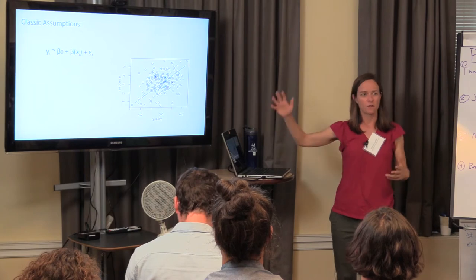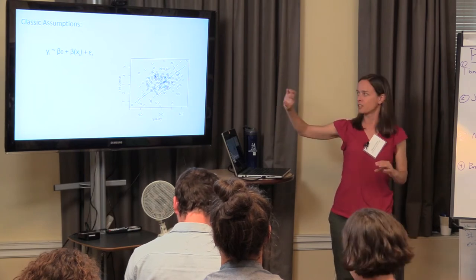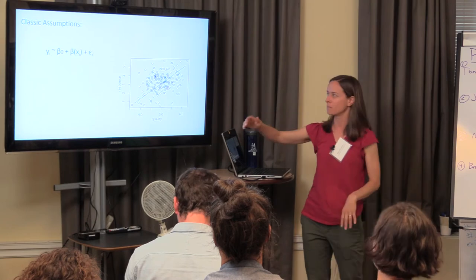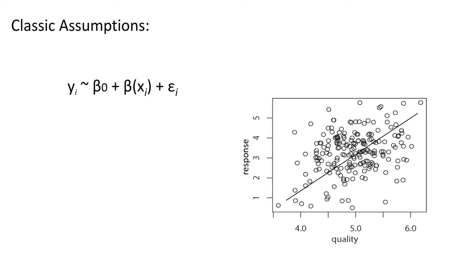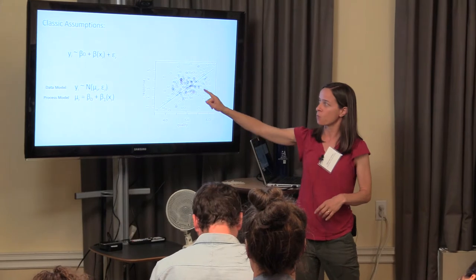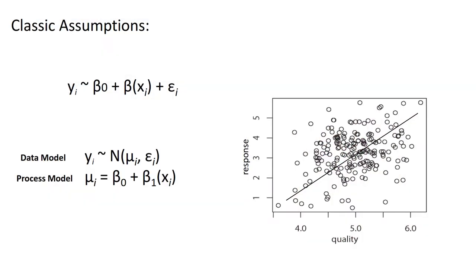I'm going to go over some terminology and formatting to make sure we're all on the same page. This line is a model — a linear model — and in this case it has an intercept and a slope. Those are our beta terms and some error. We can think about this as a data model where y, our observations, are normally distributed with some mean mu and an error term. That's our observation model, and it describes generally how big the spread of our observations is around that line.